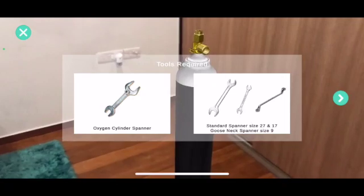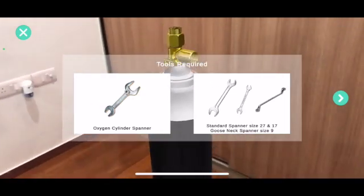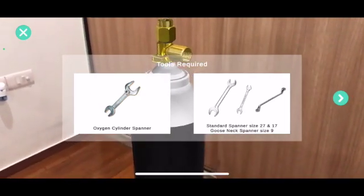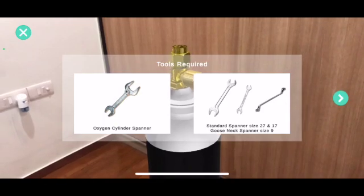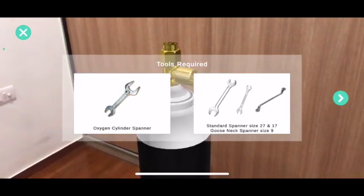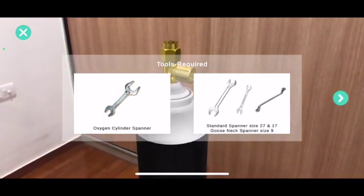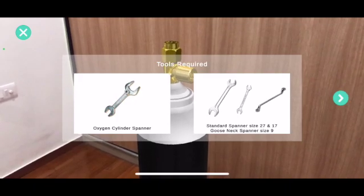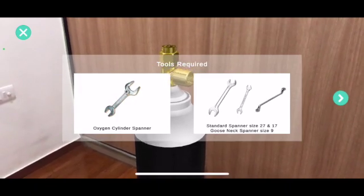Ensure you have an oxygen cylinder spanner with valve key as shown on the left. In case you don't have this spanner, you can use a standard spanner size 27 and 17 along with a gooseneck spanner size 9 to fix the flow meter and open the main cylinder valve as shown on the right.